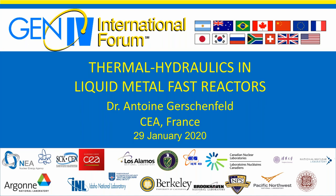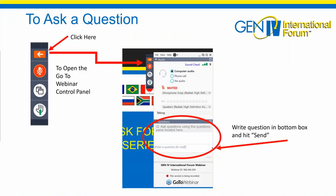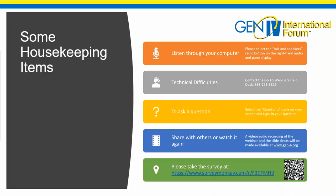Before we get started, there are a couple of housekeeping things to go over. The first is in regards to asking a question. Everyone should have a control panel with an orange rectangle with a white arrow. When you click that, it'll open up a dialog box with a pane to ask your questions. Go ahead and type questions into that pane and submit them. We will take all the questions at the end. The audio is broadcast over your computer speakers, so if you cannot hear me, please unmute your speakers. You can select the radio button on the right-hand audio pane to adjust the volume. If you have any technical difficulties, please contact the GoToWebinars help desk at the number shown on your screen.